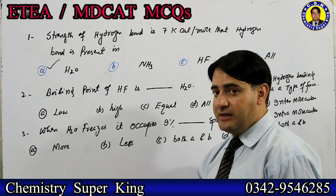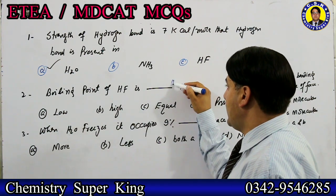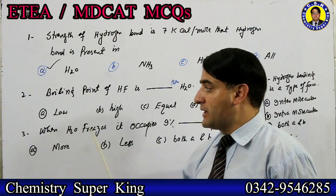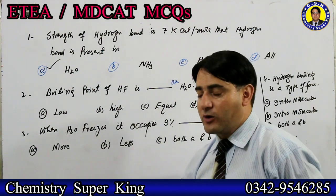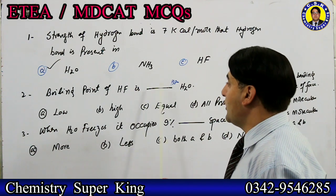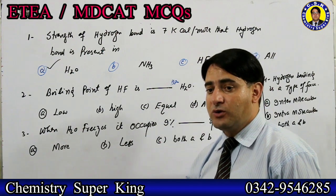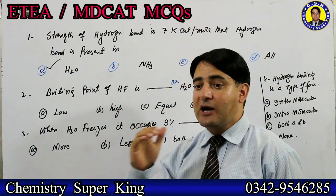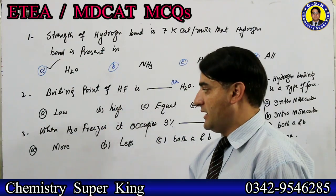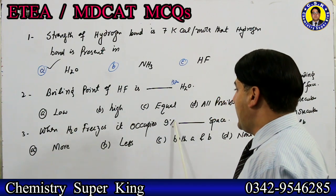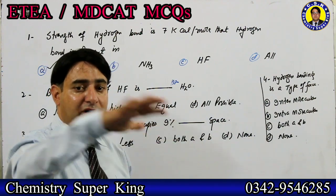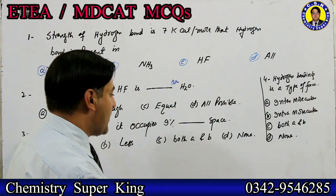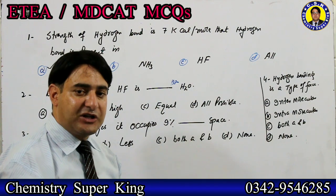MCQ: boiling point of HF compared to water — HF has a stronger hydrogen bond than water, but the extent of hydrogen bonding is greater in water. So water has a higher boiling point than HF. The boiling point sequence is: ammonia lowest, then HF, then water highest. MCQ: when water freezes, it occupies 9% more space than liquid water. When water freezes, volume increases, so it occupies more space, density decreases, and ice floats on the surface of water.